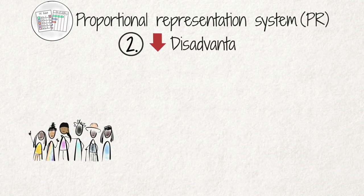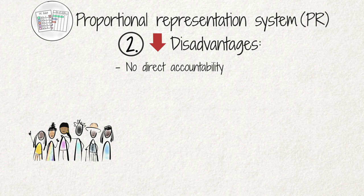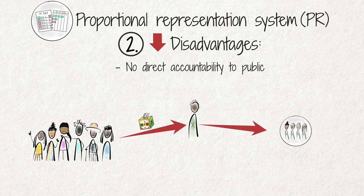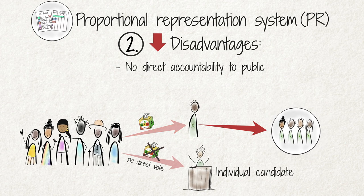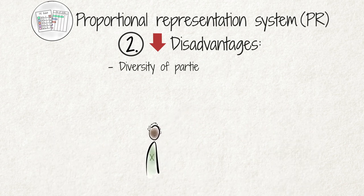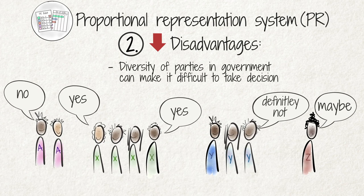The disadvantages of PR are: firstly, that the elected representatives owe their positions to the party, since people vote for the party, not for them as individuals. Therefore, they often feel more accountable to the party than to the public. Secondly, the diversity of parties in the legislature may make it difficult to take decisions and form a government.